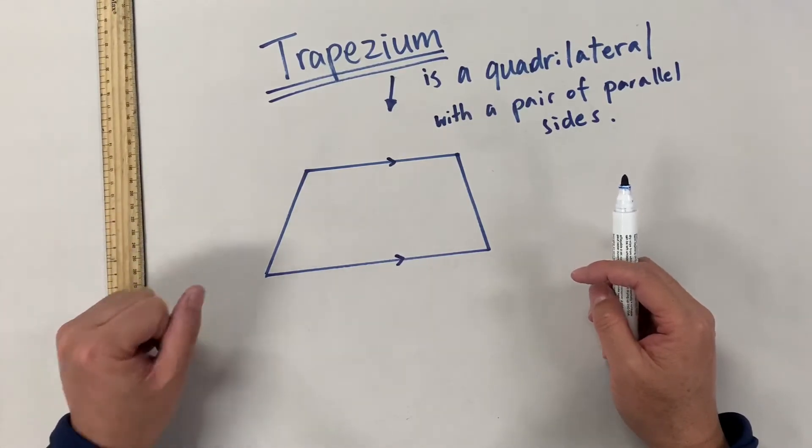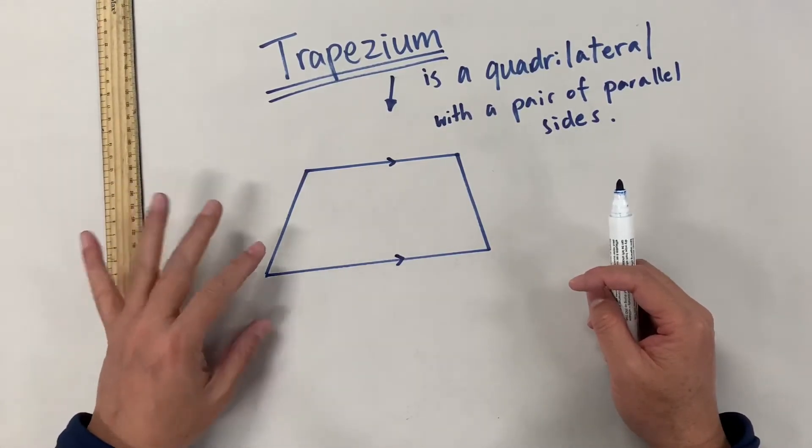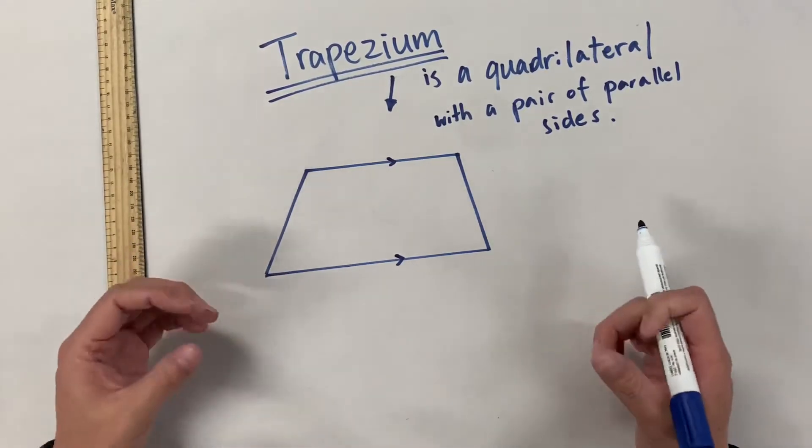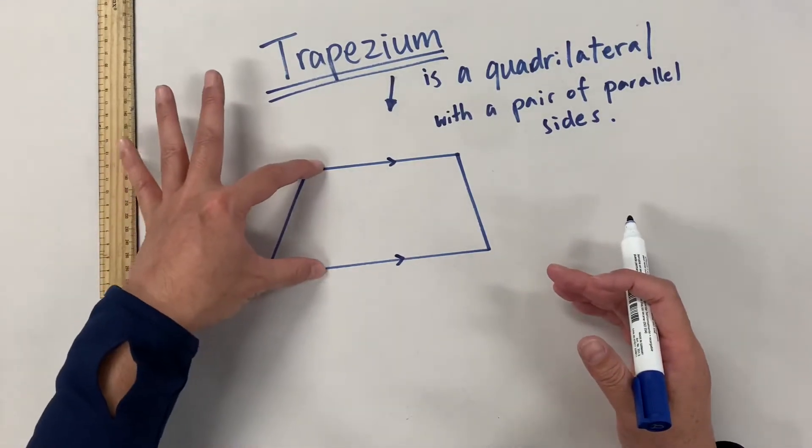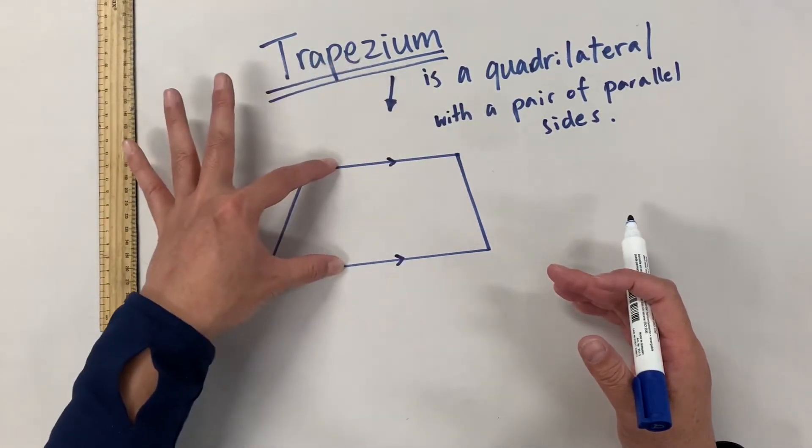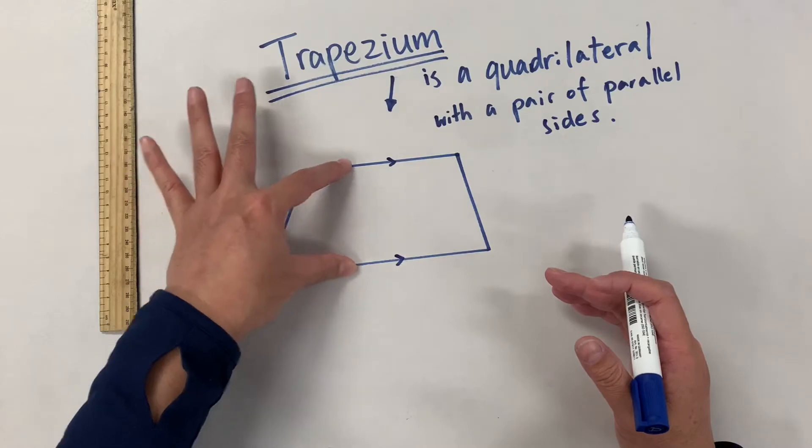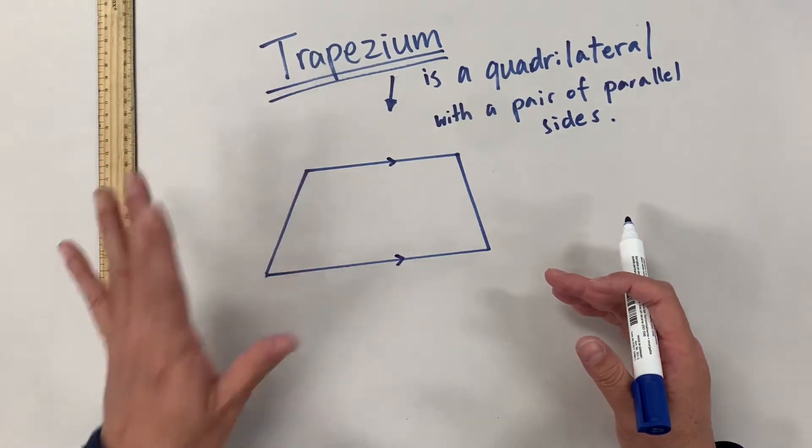Let's quickly pause the video. Can you think of another shape or the shape you already know that has a pair of parallel sides?